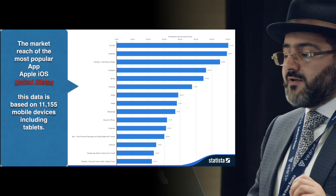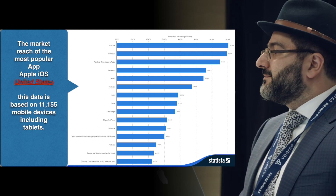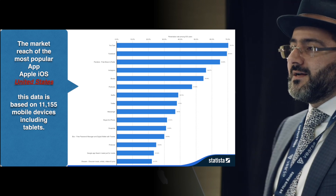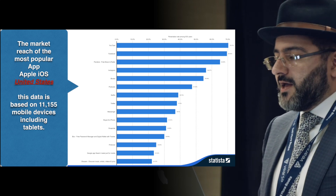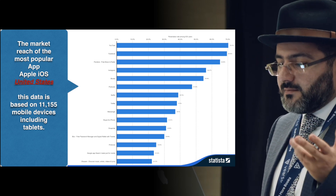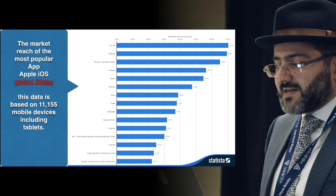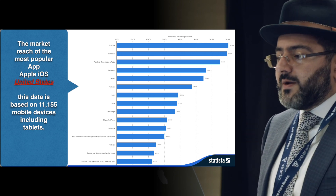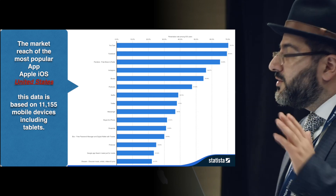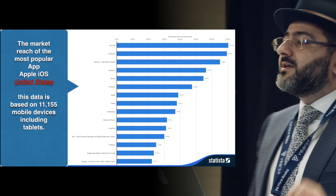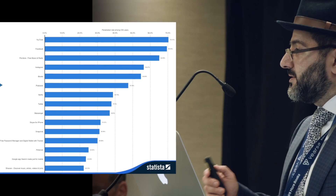YouTube, Facebook, Pandora, Instagram, and iBooks top the list. YouTube and Facebook are what users are actually using day to day — they're using Facebook, YouTube, and Instagram. These are key elements for market reach as an author. You want to get your book into those apps because that's what most people are viewing daily. iBooks is already pre-installed on the iPhone, so its penetration figure is a given — but Facebook and YouTube represent the truly active usage.